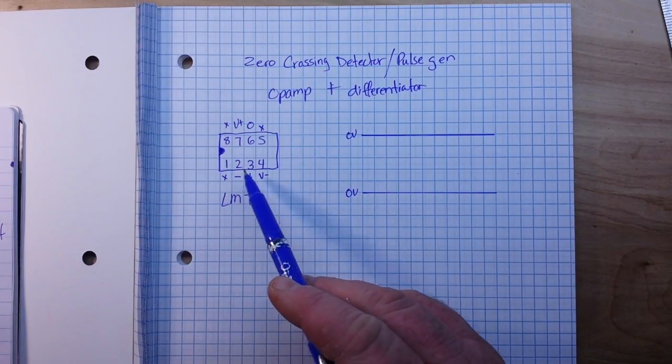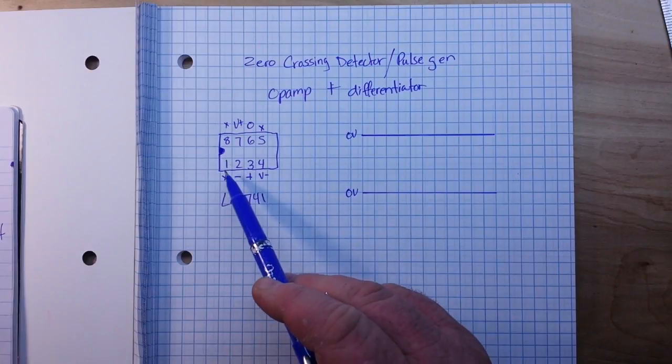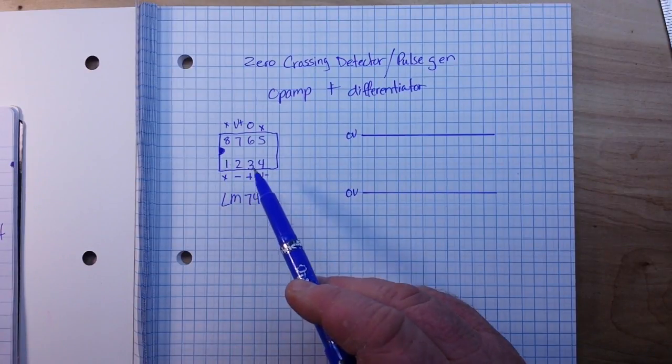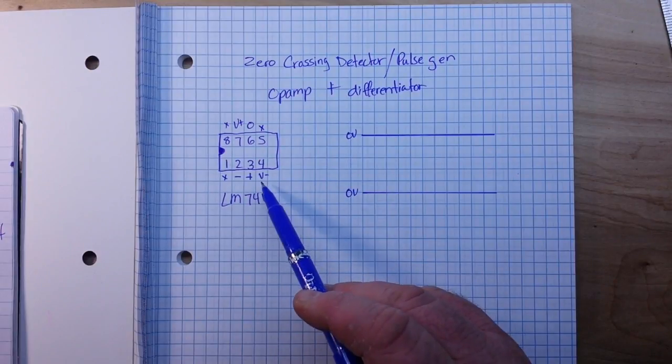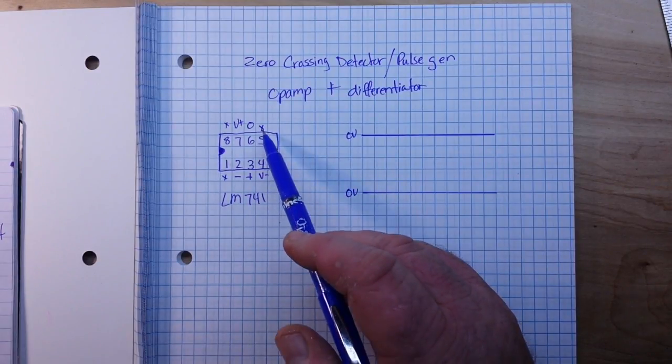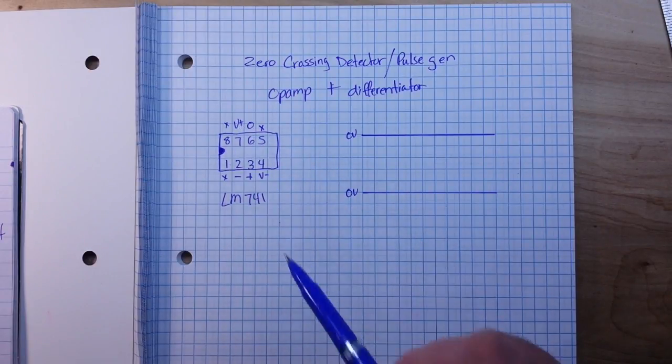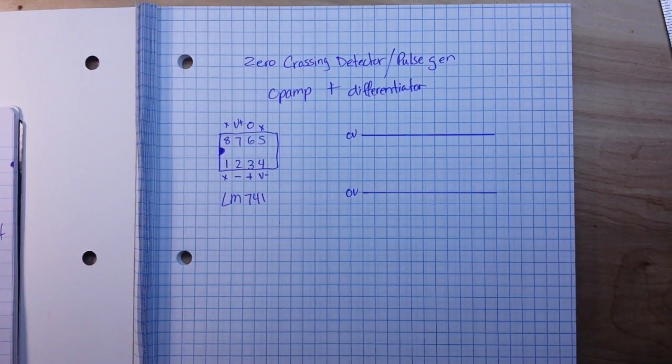Pin one is not connected, pin two is our inverting input, pin three is our non-inverting, pin four is our negative voltage, pin five is not connected, pin six is our output, pin seven is our positive voltage, and pin eight is not connected.